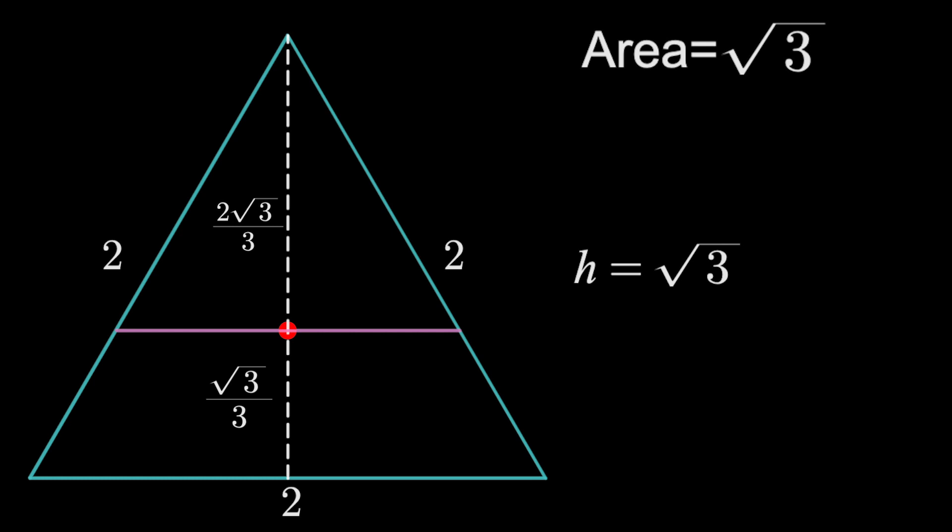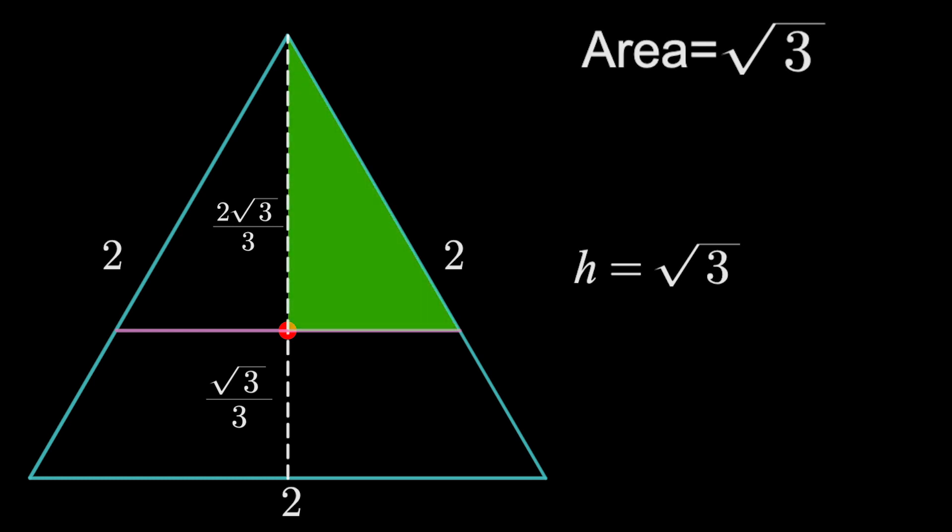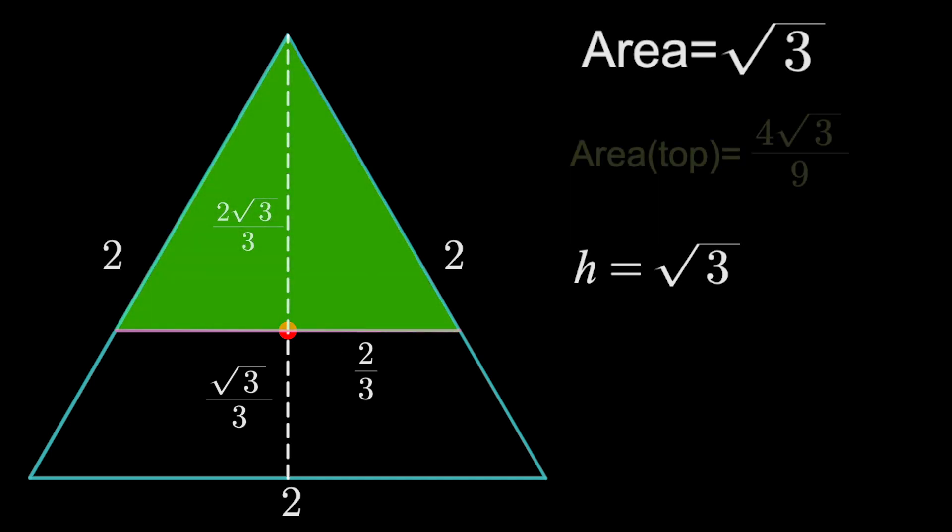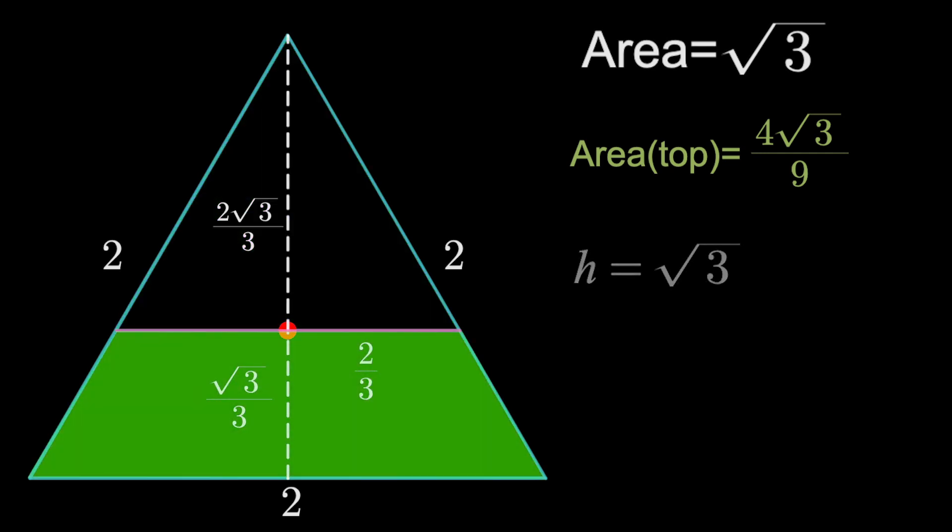Then, because this is also a 30-60-90 triangle, we know this base here is 2 thirds. As a shortcut, just realize if you take the middle side length and divide by root 3, you get the shortest. But with that, we can find the area of this upper piece is 4 root 3 over 9. And this means the bottom piece must have an area of 5 root 3 over 9, since the total must be root 3.